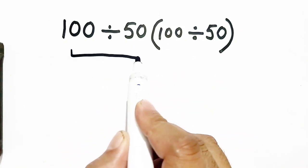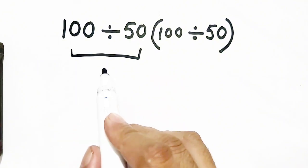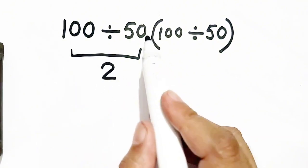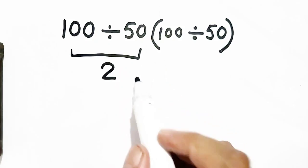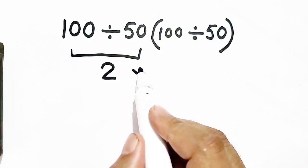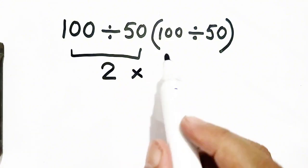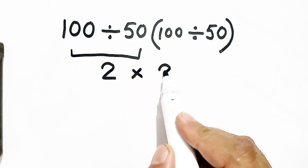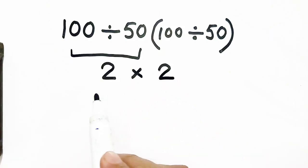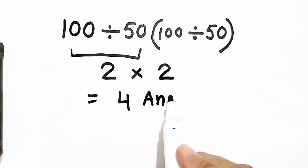100 divided by 50 will be equal to 2. There is no sign, so my duplication is there. 100 divided by 50 is equal to 2. So, 2 times 2 will be equal to 4, which will be our answer, but it is the wrong method.